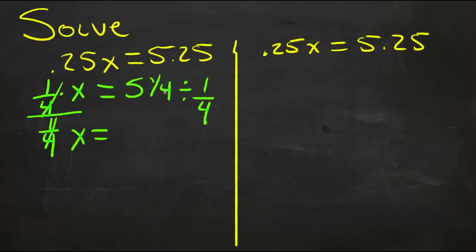5 times 4 is 20, and 1 quarter times 4 is 1, so that would be a total of 21.